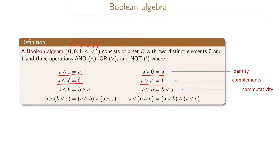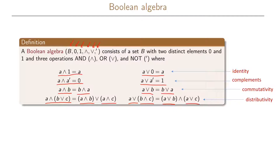We have commutativity which says that A AND B equals B AND A, and A OR B equals B OR A. Then we have the two distributive laws: A AND (B OR C) equals (A AND B) OR (A AND C), and the other distributive law A OR (B AND C) equals (A OR B) AND (A OR C).